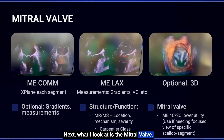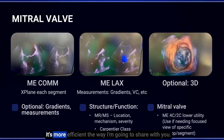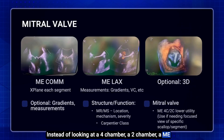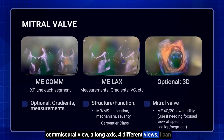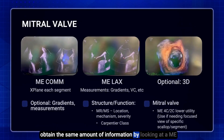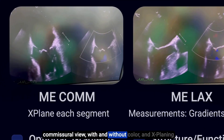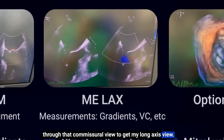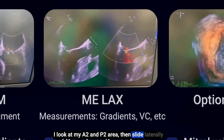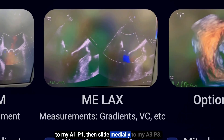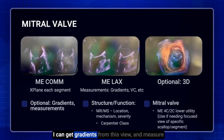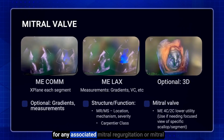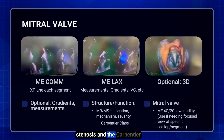Next I look at the mitral valve. I do this a little differently — instead of looking at four separate views (4-chamber, 2-chamber, commissural, and long axis), I can obtain the same information by looking at a midesophageal commissural view with and without color, and X-planing through that commissural view to get my long axis view. I look at my A2 and P2 area, then slide laterally to A1 and P1, then slide medially to A3 and P3. I can get gradients from this view and measure vena contracta from my long axis views, and look for any associated mitral regurgitation or mitral stenosis and the Carpentier class.